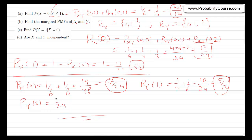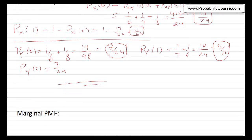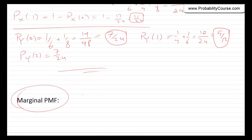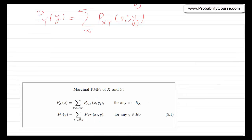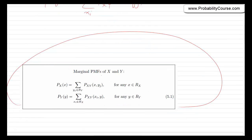We can generalize this. In general, if you have the joint PMF, you can find the marginal PMFs. To find p_x(x) for any fixed x, sum over all possible y's: p_x(x) = Σ_y p_xy(x, y). Similarly, to find p_y(y) for any fixed y, sum over all possible x's: p_y(y) = Σ_i p_xy(x_i, y). This is an application of the law of total probability. We can always find the marginal PMFs from the joint PMF.